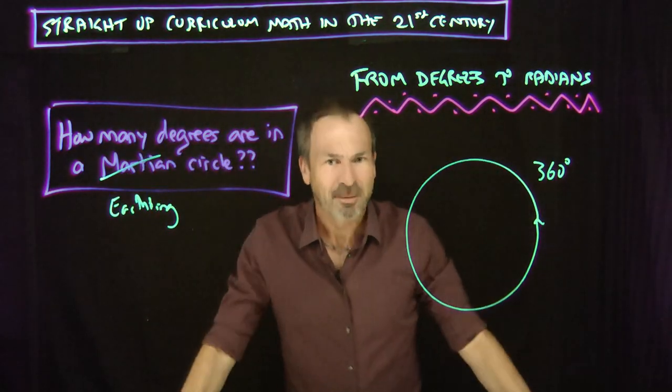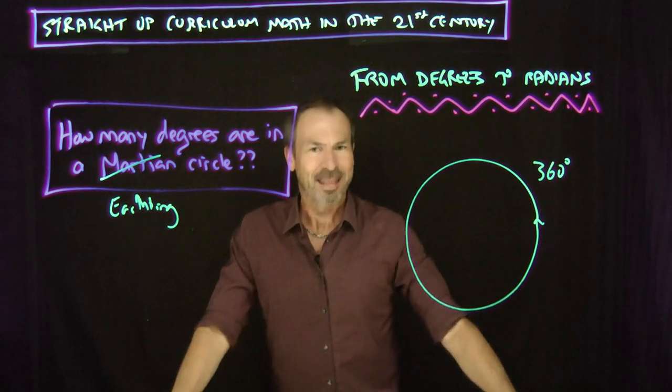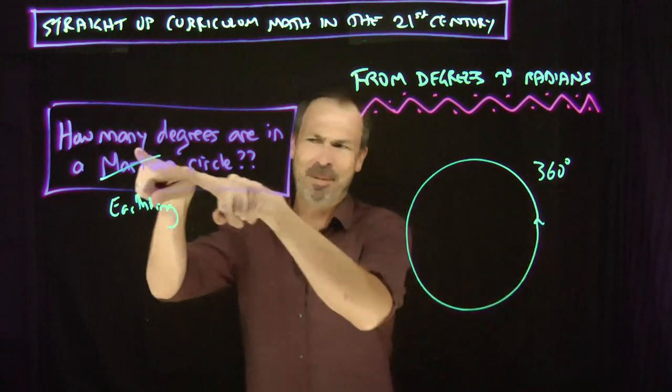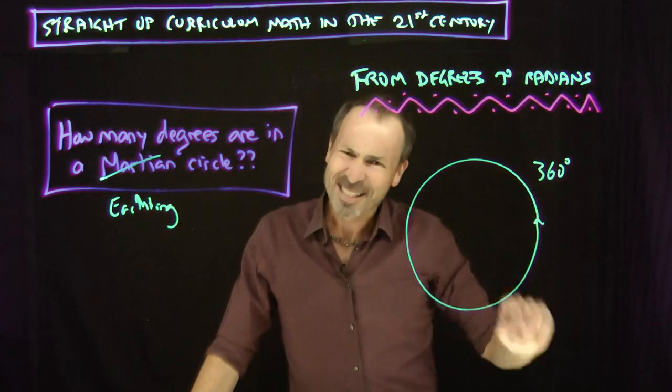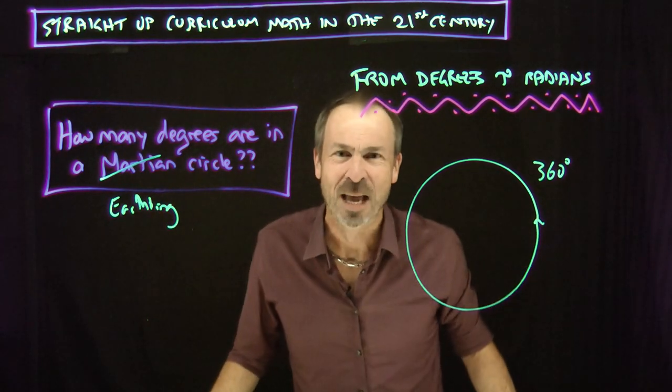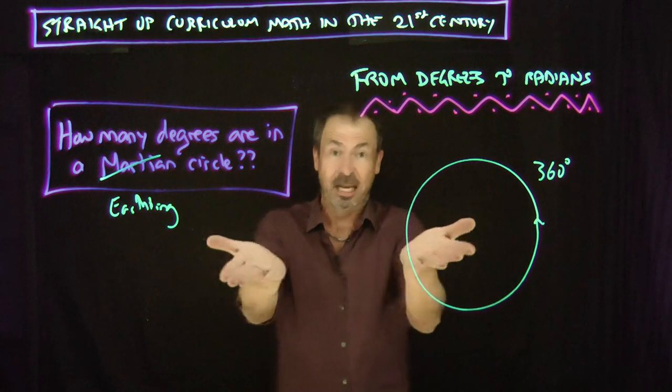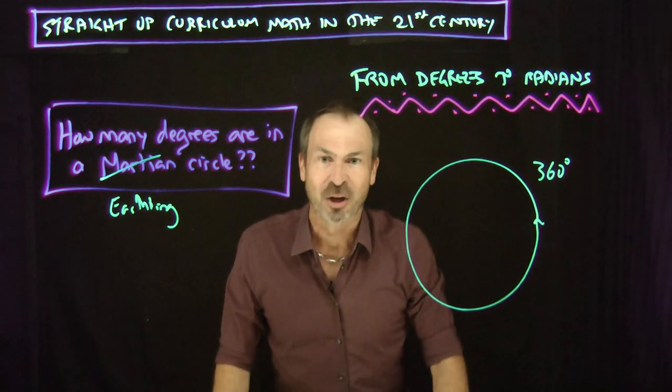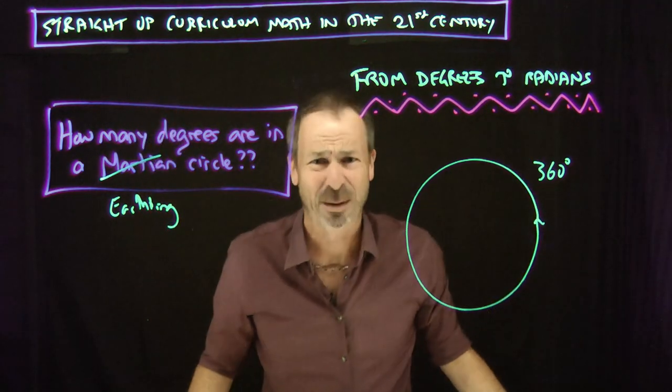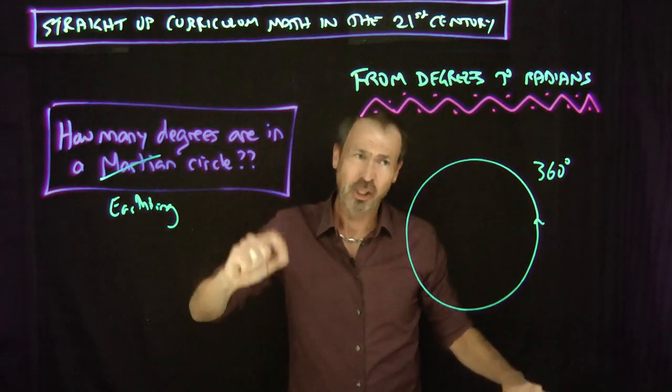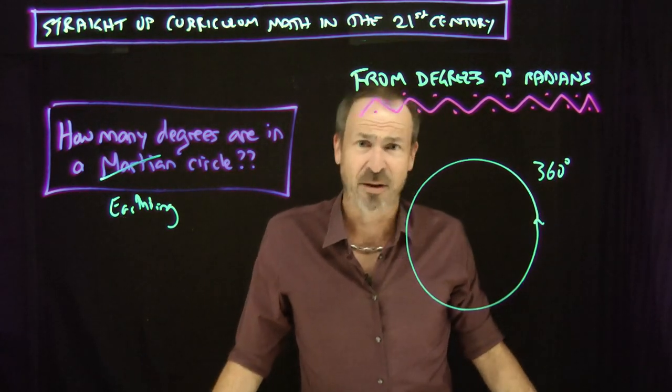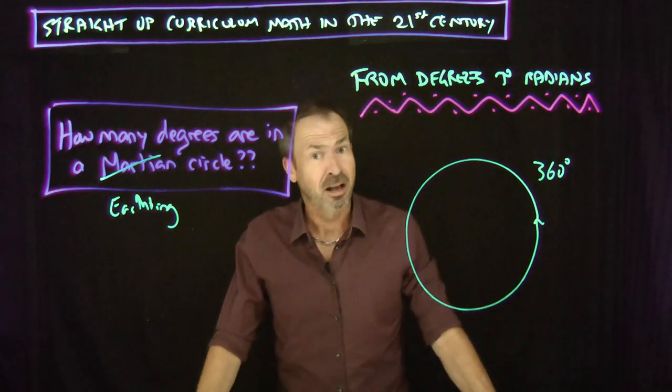Every question answered actually induces, invites more questions. Because I'm now wondering, think about it, 360! Let me focus on Earthlings for a moment. 360! Where did that number come from? Who chose the number 360 for the count of degrees in a circle? You wouldn't actually come up with the number 360, that's kind of weird!